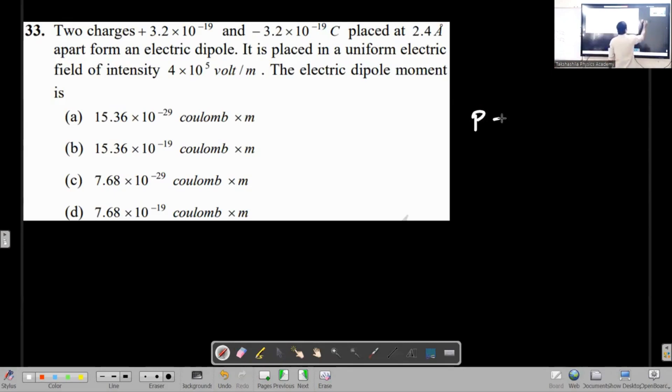It's too simple. What is dipole moment? Q times d. 3.2 into 10 to minus 19, what is the distance between them? 2.4 into 10 to minus 10.